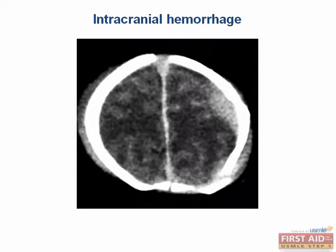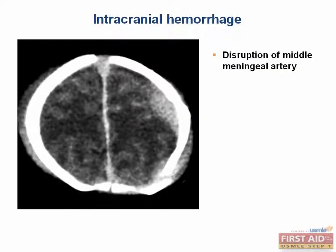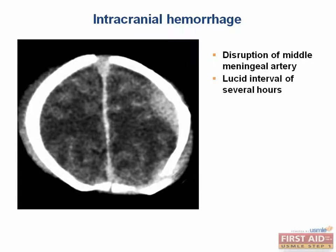We've been talking about different strokes and lesions, and I want to delve a little bit deeper into our discussion of hemorrhages by talking about intracranial bleeds starting with epidural hematomas. An epidural hematoma is a collection of blood between the dura and the skull. Most are caused by disruptions of the middle meningeal artery, usually due to some type of fracture of the temporal bone by head trauma. Epidural hematomas are characterized by lucid intervals of several hours.